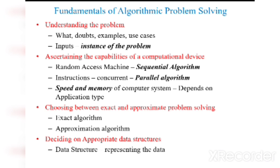Choosing between exact and approximate problem solving. For example, if we have two problems: one is calculating the GCD of a number and the next one is calculating the square root of a non-perfect number. For GCD, we have to get a perfect number, which means we have to get the exact solution, so we'll be using the exact algorithm for that.